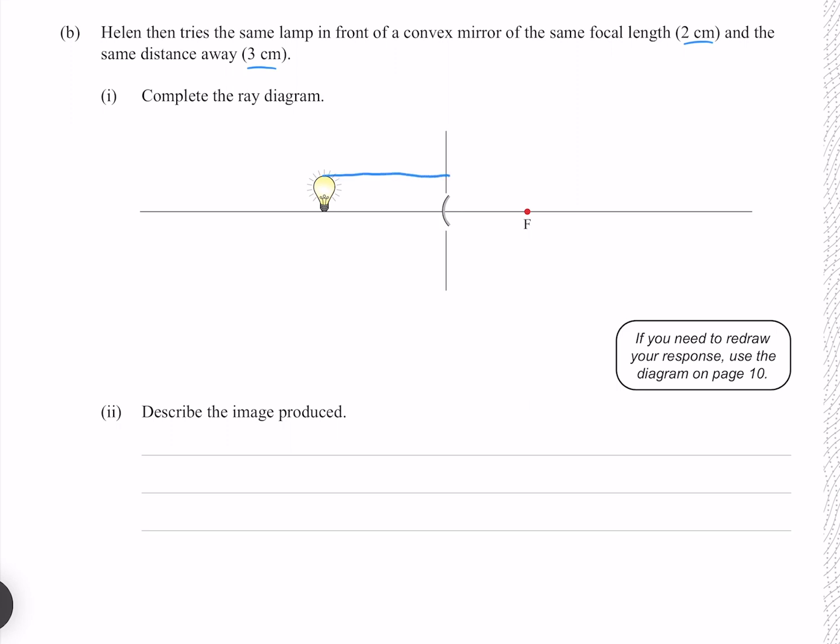Our first ray goes parallel to the axis and then away from the focal. Our second ray refracts symmetrically about the middle, and our third ray goes towards the focal and then reflects parallel. As we can see, all of these rays are diverging, meaning that we have to backtrace them virtually.